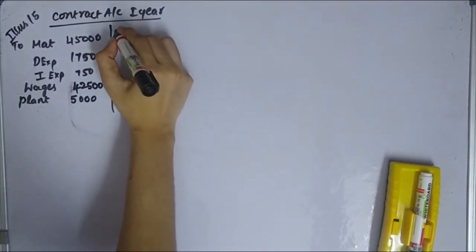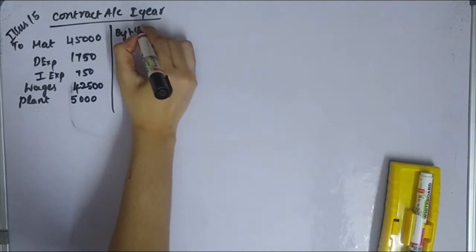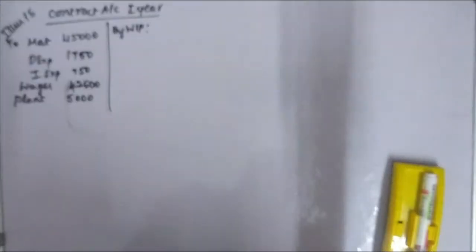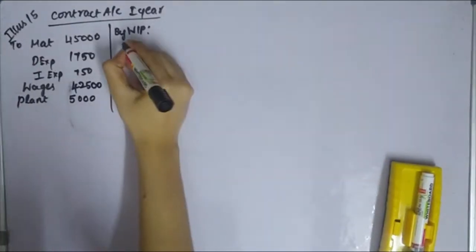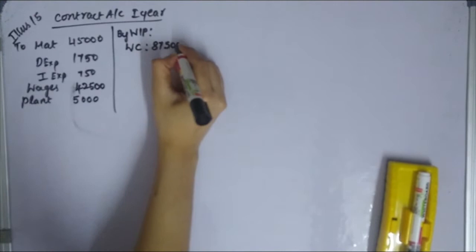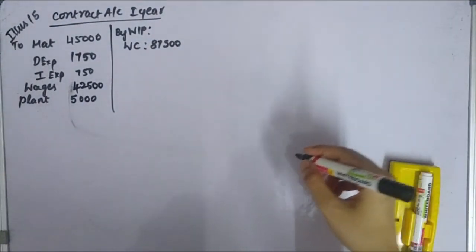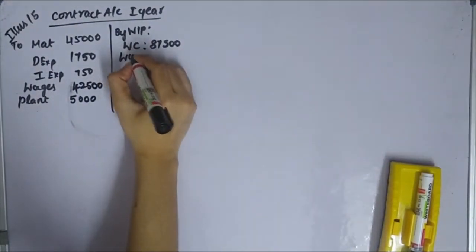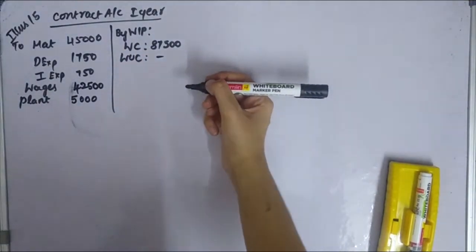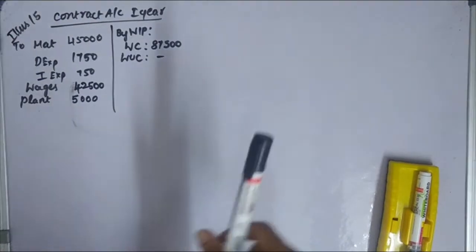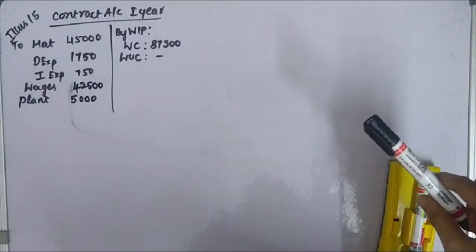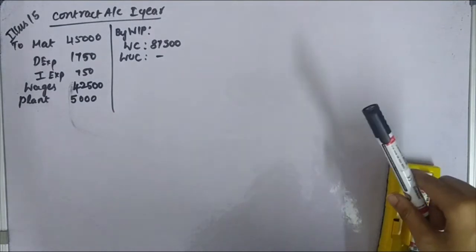On the credit side, we have work in progress — total work certified Rs. 87,500. Work uncertified is also noted. The value of the plant at the end of the first year was Rs. 4,000.